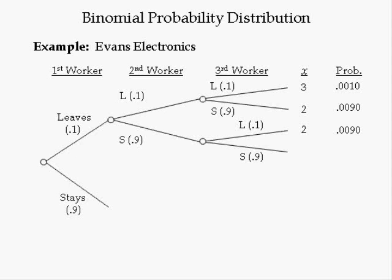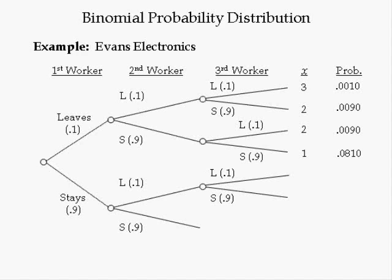If the first worker leaves but the second and third stay, X equals 1. The probability of leave and stay and stay equals 0.1 times 0.9 times 0.9, which equals 0.0810. Given the first worker stays, the second worker can stay or leave. Given the first worker stays but the second one leaves, if the first worker stays but the second and third leave, X equals 2. The probability of stay and leave and leave equals 0.9 times 0.1 times 0.1, which equals 0.0090. If the first and third stay but the second leaves, X equals 1. The probability of stay and leave and stay equals 0.9 times 0.1 times 0.9, which is equal to 0.0810.